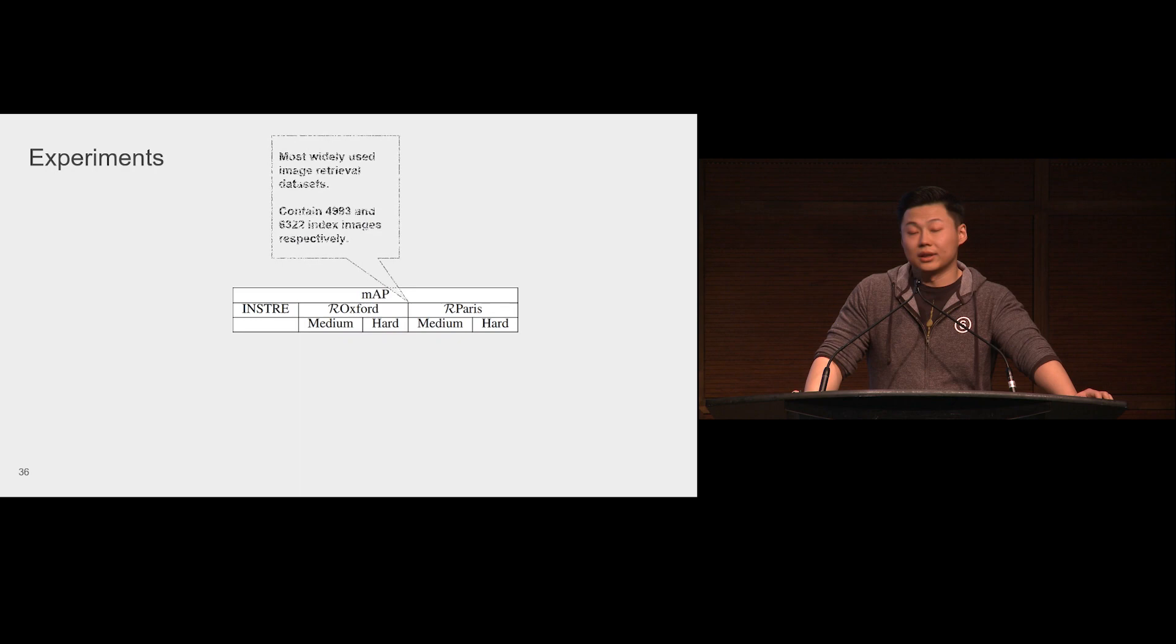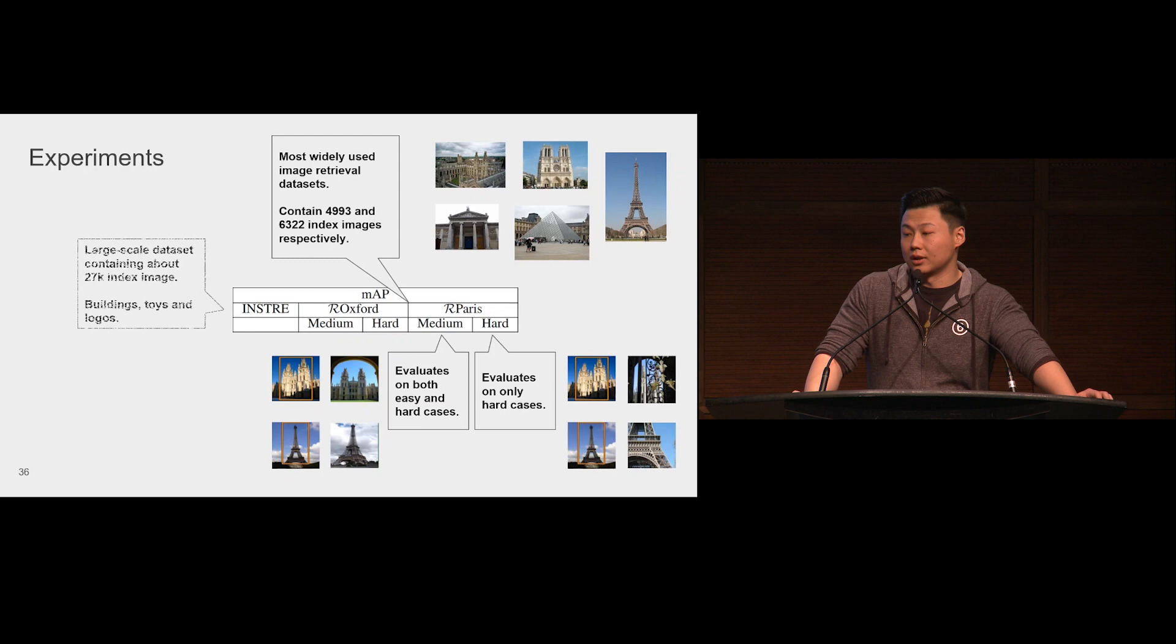For quantitatively evaluating our model, we experimented with three datasets. The revisited Oxford and Paris are the most widely used image retrieval datasets. They come with different settings, where medium setting values both easy and hard cases, but in the hard setting, all relevant images are hard cases. We also experimented with a large-scale dataset called InstaRE. It contains objects like buildings, toys, and logos. Achieving good results on this dataset shows our model not only works well with landmark data, but also generalizes to other instance-level image retrieval datasets.